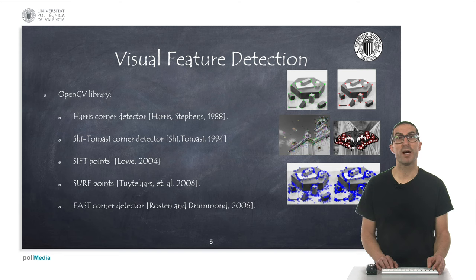SIFT points introduce an improvement: they are invariant to scale and rotation, while the previous methods were only invariant to rotations. SURF points represent a computational improvement over SIFT points. The FAST corner detector is significantly faster than the previous ones, but it's not very robust against high noise levels. I recommend reading the OpenCV documentation and related papers to learn details and insights about these techniques.